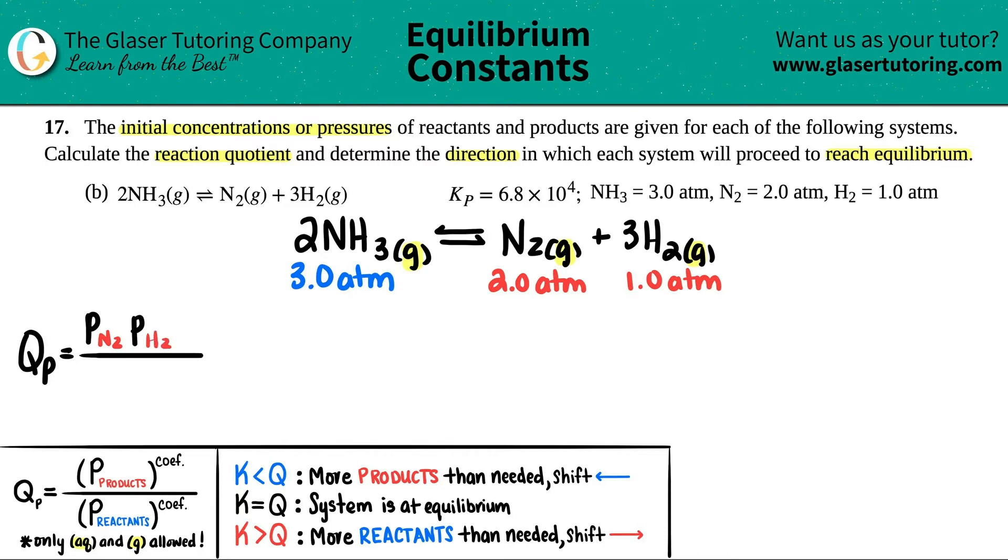But this one has a coefficient. There's a three here, so I have to raise this one in parentheses to the third. Then I do the reactant, so I got pressure of NH₃, and there's two of them, so I have to put that in brackets and raise it to the second.